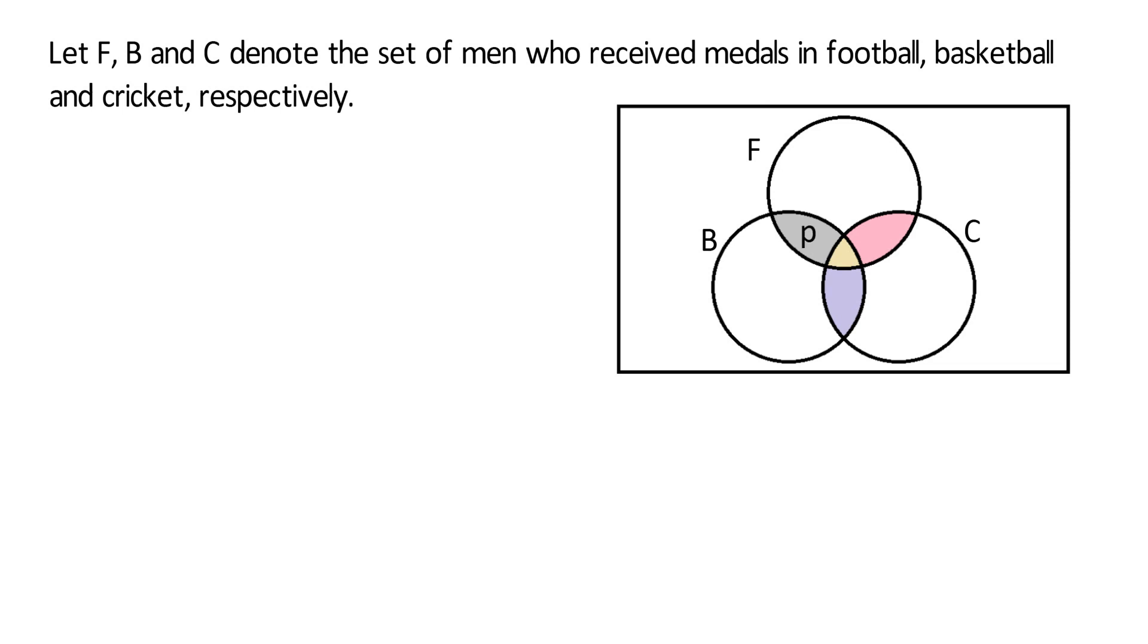Let P denote the number of men who got medals in football and basketball only, Q denote the number of men who got medals in football and cricket only, R denote the number of men who got medals in basketball and cricket only, and S denote the number of men who got medals in all the 3 sports.